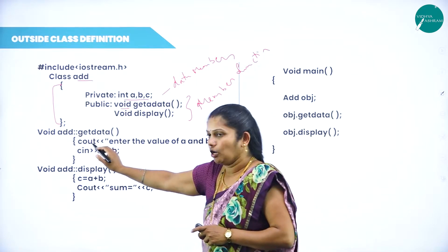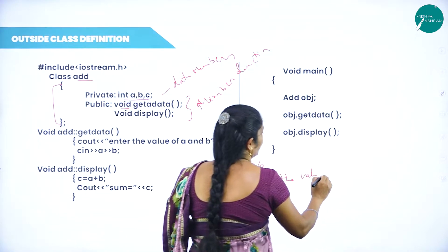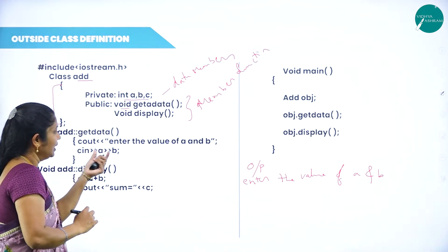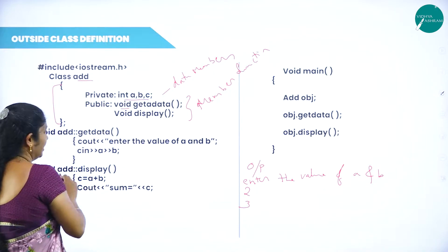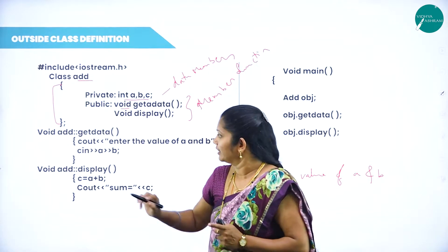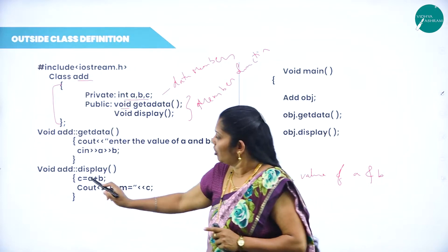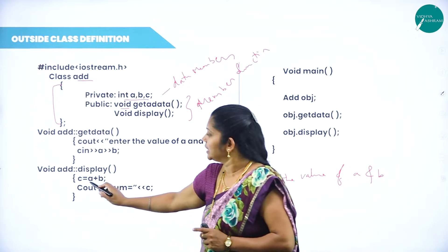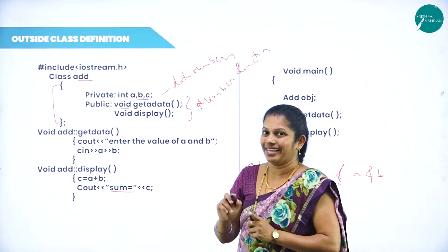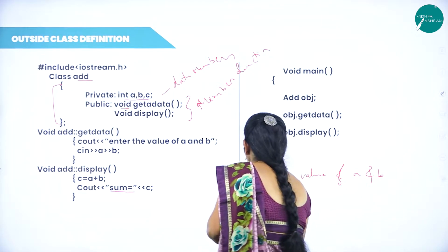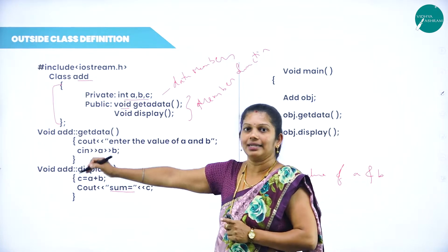Cout displays 'enter the value of A and B'. This is the cout statement — in the output screen it will display 'enter the value of A and B'. Then cin with extraction operator reads A and B — we will enter the value 2 and 3 for example. Then one more function we are writing — that is the display function. Void, the return type for display function is void, then class name add, scope resolution operator, display function. On this display function, we write C equals A plus B. Then cout displays 'sum equals C'. Without quotes if you write any variable, then whatever value is inside that, that value will be displayed.